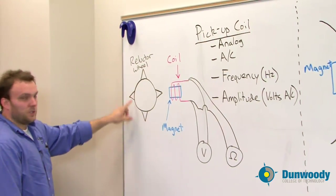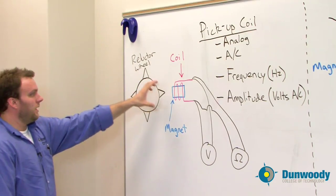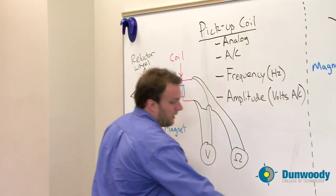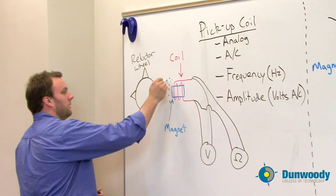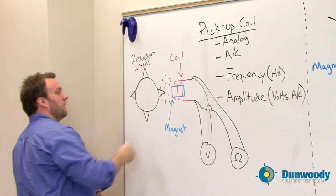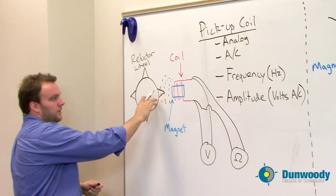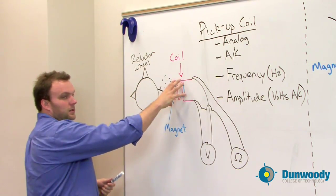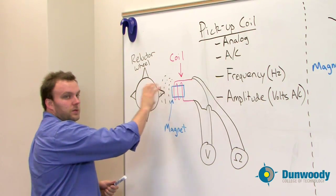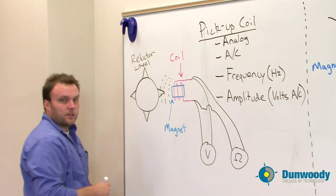As this reluctor wheel spins, it cuts the magnetic field that's being created by this magnet. So that magnetic field comes out here, comes out here, comes out here. And as it's cut by these blades, that sends an AC voltage into the conductor or the actual coil, which then routes the AC voltage out of the system.